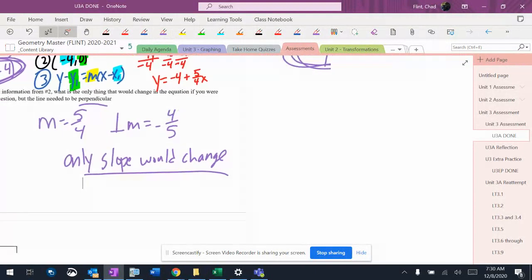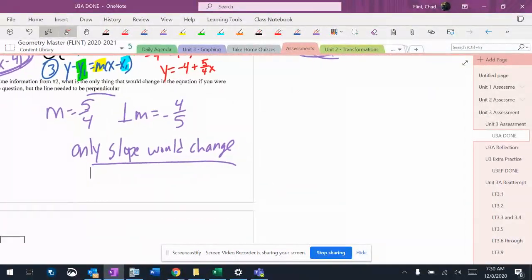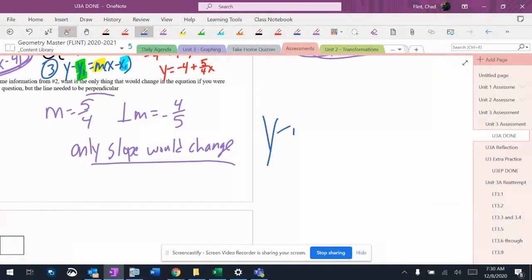If you want to, it would be literally the same equation. So it would be y minus 0 equals negative 4 fifths times x minus 4, I believe.